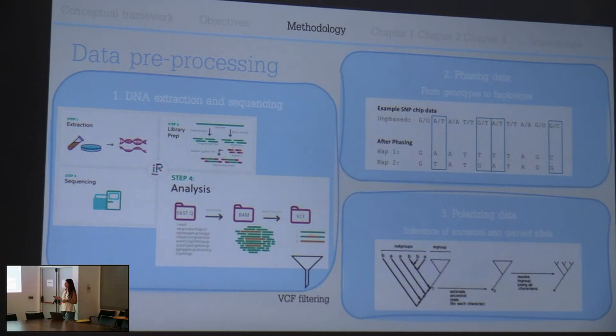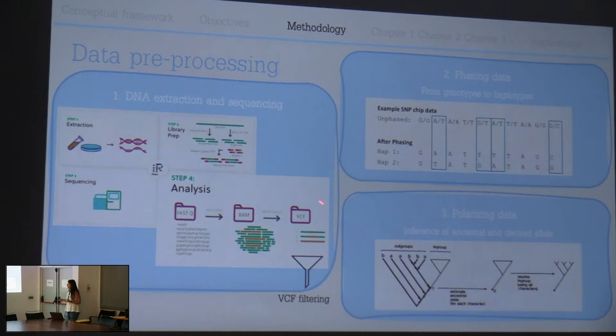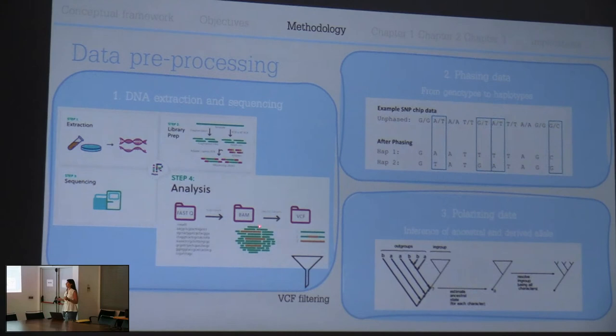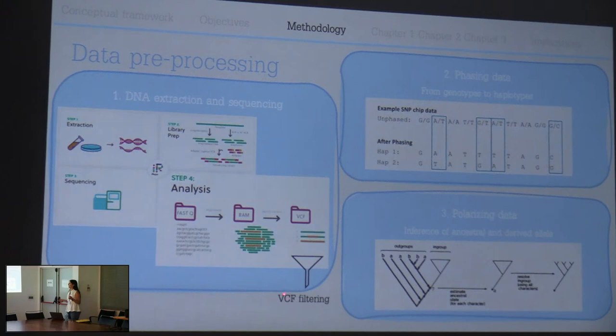For data preprocessing, we have three main steps. The first is DNA extraction and sequencing. When I receive the raw reads, I align them to a reference genome - in our case, we use the cat genome as the reference for all four lynx species. Then we do variant calling, which means getting the SNPs, the variants of the reads. The variant calling file passes through different filtering steps to clean the data.